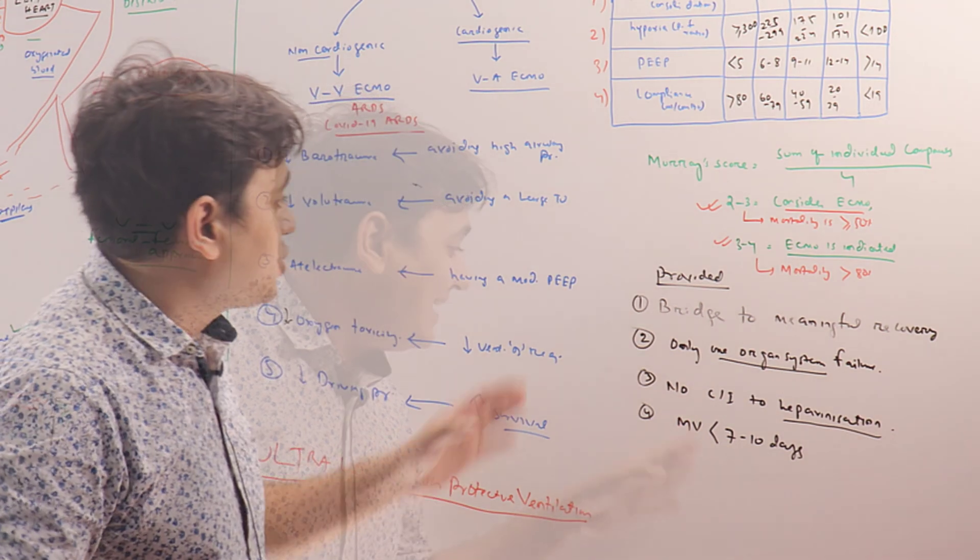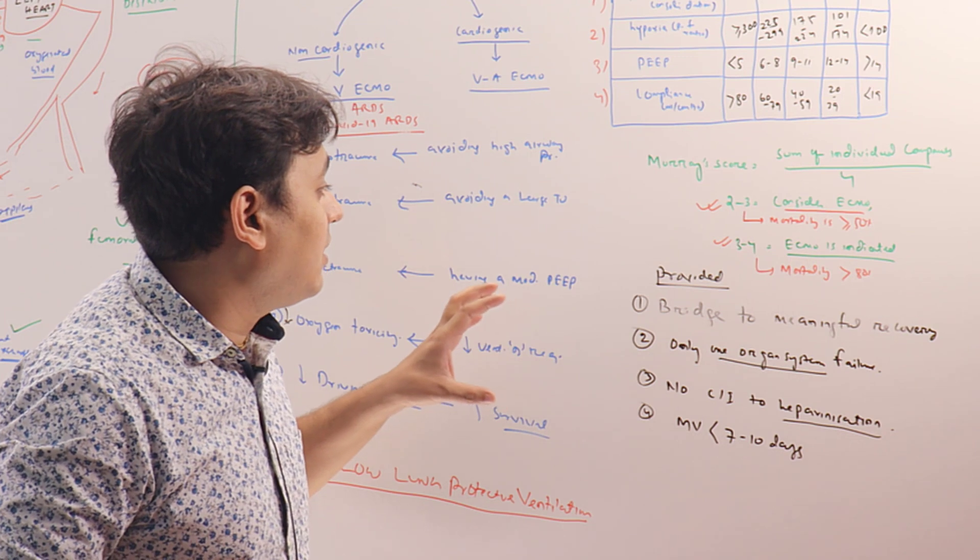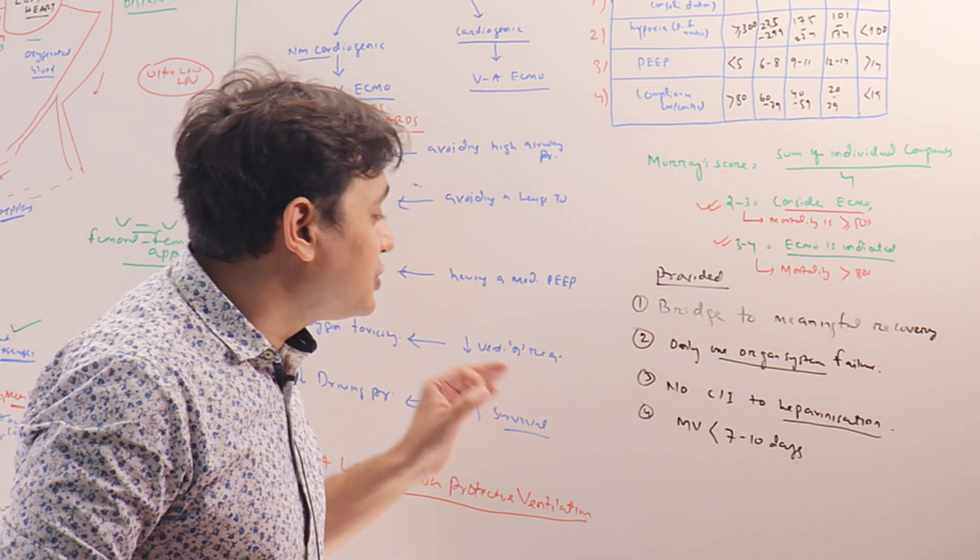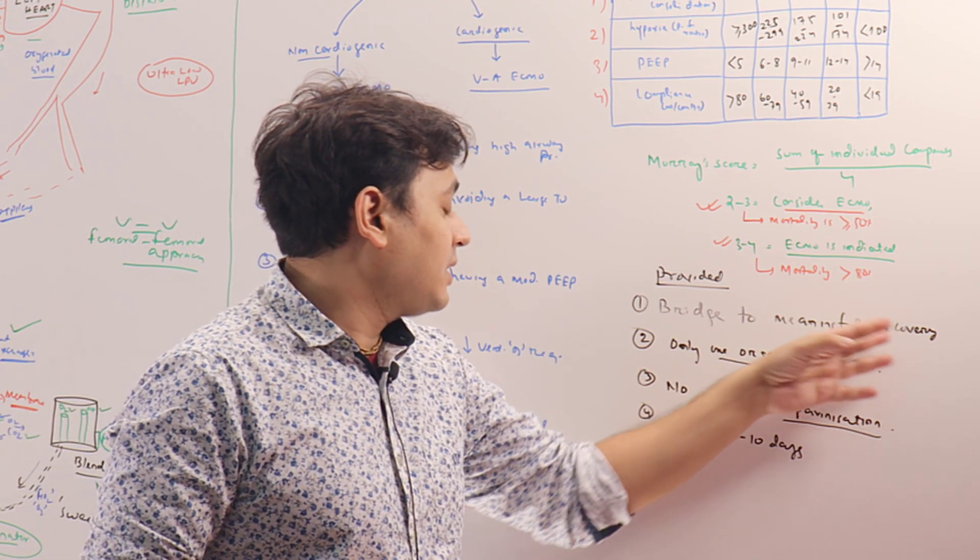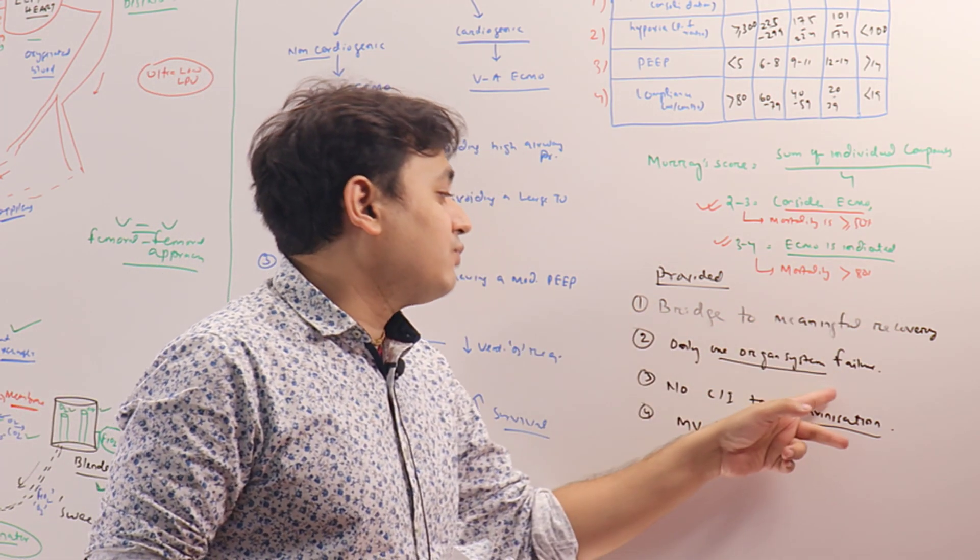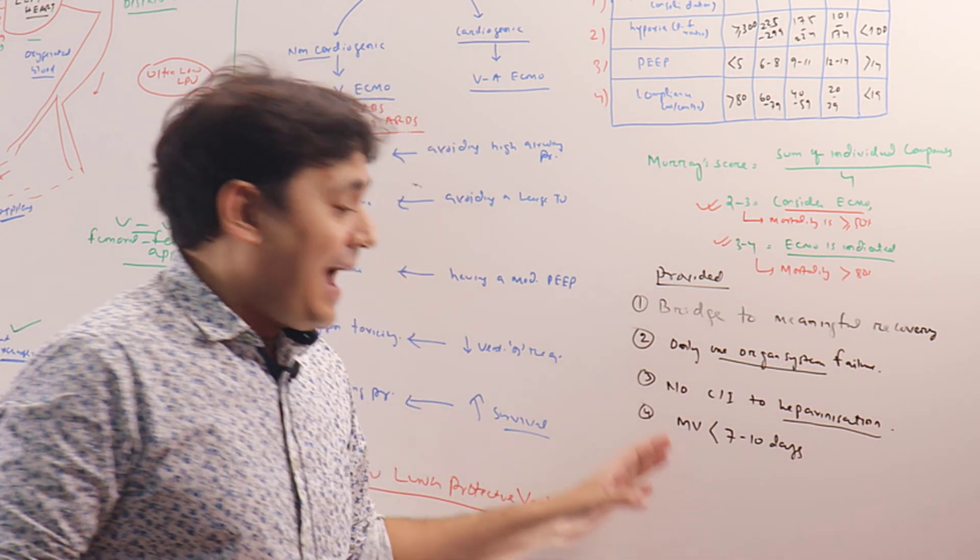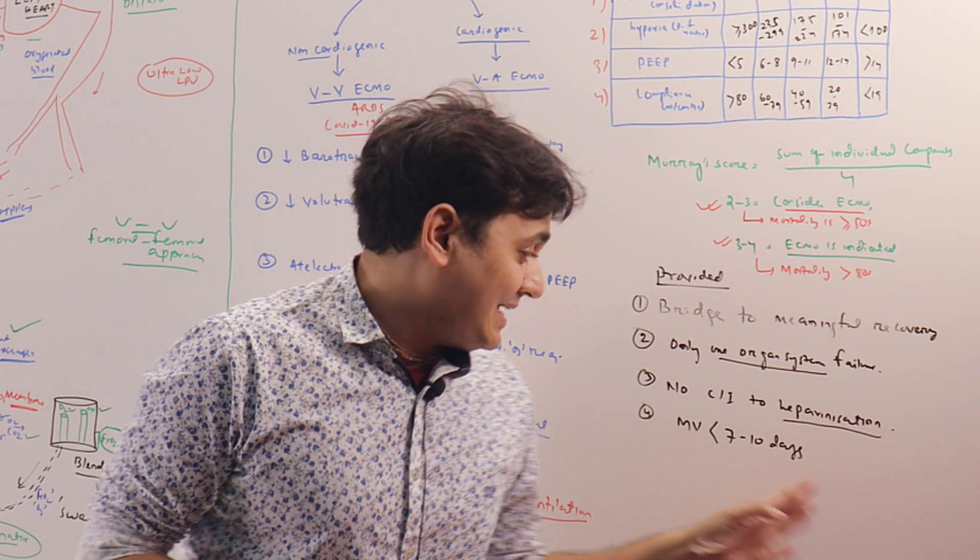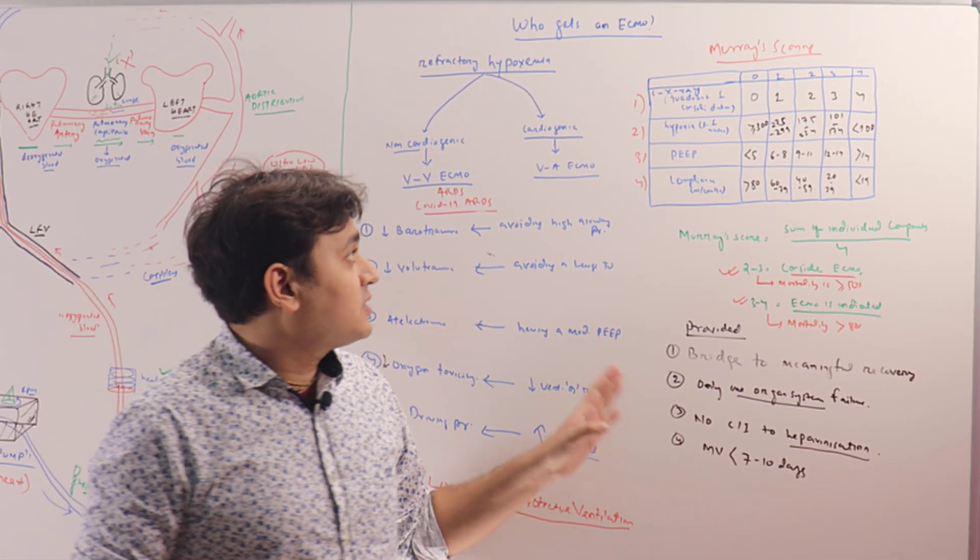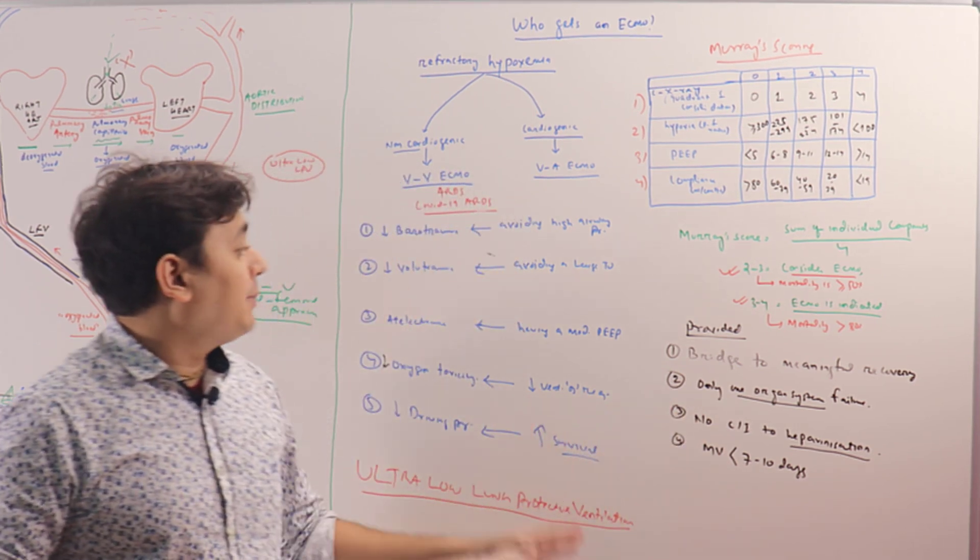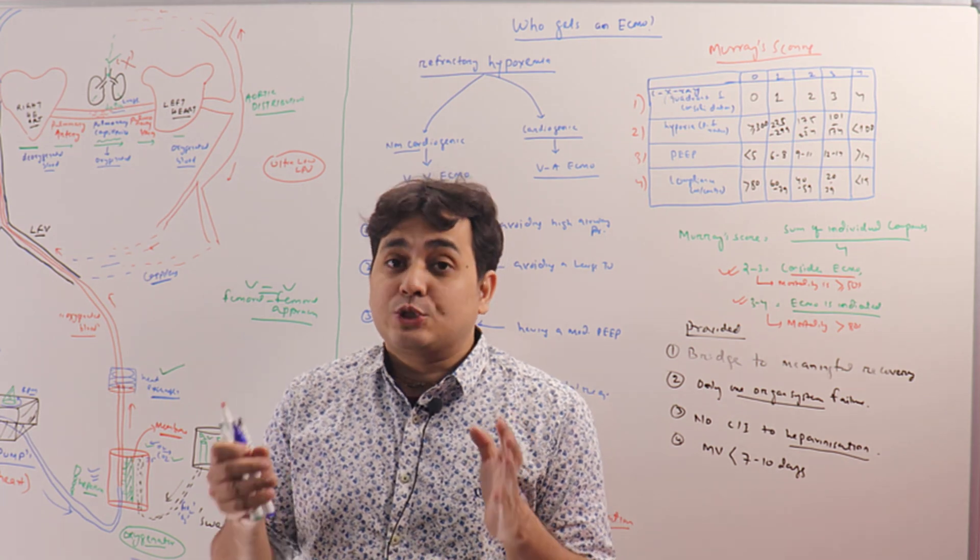So what are the four conditions that have to be met? First, the disease condition of the patient is reversible, so we are putting the ECMO as a bridge to meaningful recovery. Second, only one organ system failure—the lung. Third, no contraindications to heparinization. Fourth, mechanical ventilation duration less than 7 to 10 days, the earlier the better. These are the patients who will go into ECMO.